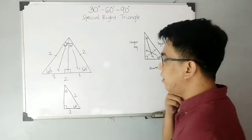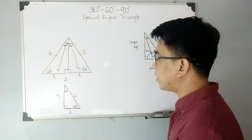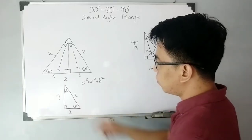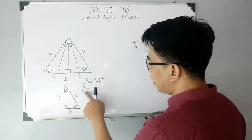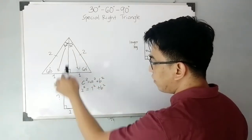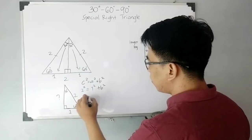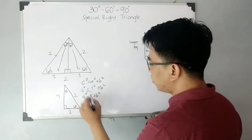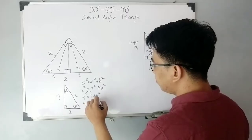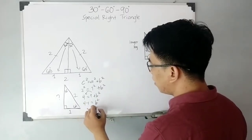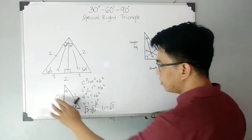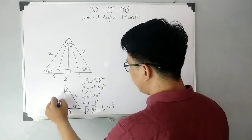We can find the remaining side using the Pythagorean theorem: c² = a² + b², where c is the hypotenuse equal to 2 and a equals 1. So we have 4 = 1 + b², which gives 4 − 1 = b², therefore 3 = b². Simplifying, b is equivalent to the square root of 3. So the length of this remaining side is √3.